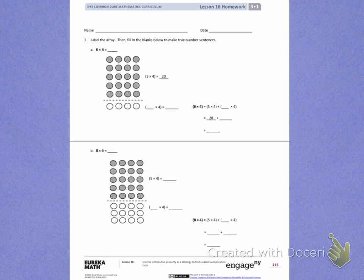I'm going to demonstrate letter B for you, so you will do letter A on your own. On letter B, I see I need to find the total for 8 times 4. To do this, I'm going to use 5 times 4 and another multiplication problem. So to start,